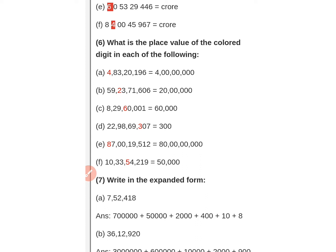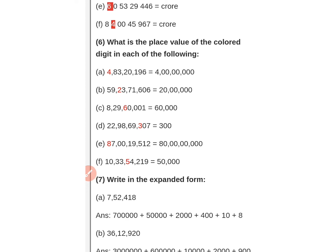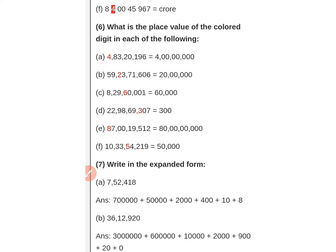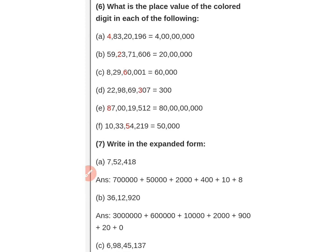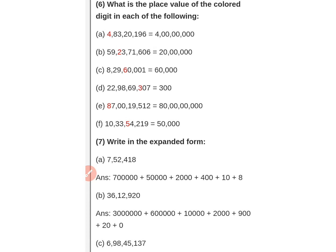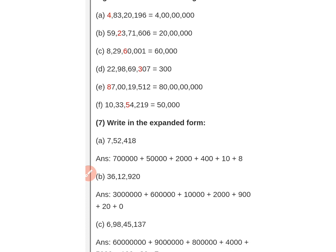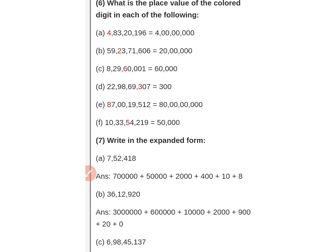Look here: four is in which place? Counting — ones, hundreds, thousands, ten thousands, lakh, ten lakh, and crore. So four is in the crore place. Then two is in which place? Ones, hundreds, thousands, ten thousands, lakh — ten lakh place. So two represents twenty lakh.